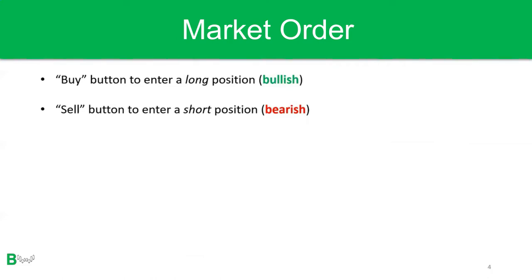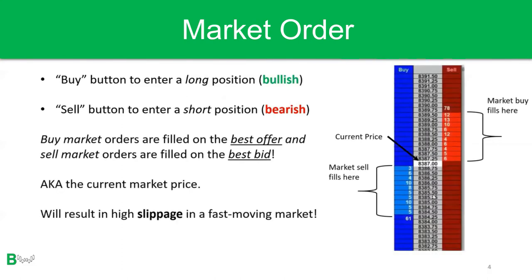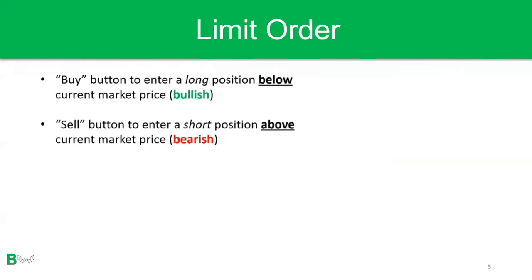When you hit the buy button to enter a long position or the sell button to enter a short position, buy market orders are filled on the best offer and sell market orders are filled on the best bid — the current market price. This will result in high slippage in a fast-moving market. On the active ladder, the current price is highlighted in white. The best 10 offers are above and the best 10 bids are below. A market buy fills above the current market price on the offer side; a market sell fills on the bid side below the current market price.